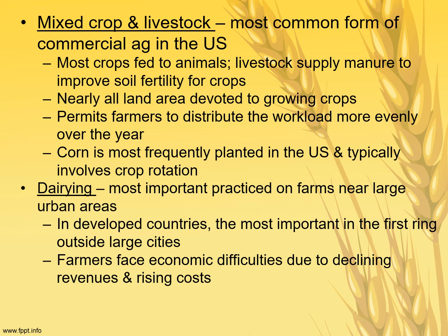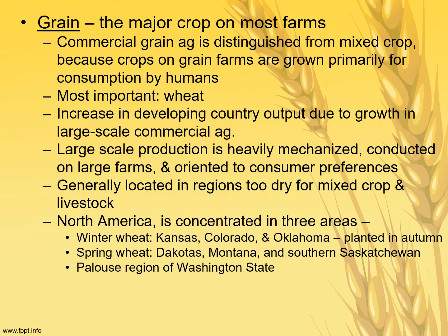Dairying is the most important practice on farms near large urban areas in developed countries — it represents the first ring outside large cities, as we'll discuss in the Von Thünen model. Farmers face economic difficulties in dairying due to declining revenues and rising costs. Grain farming is commercial agriculture distinguished from mixed crop and livestock because crops are grown primarily for human consumption. The most important grain is wheat. Large-scale production is heavily mechanized on extremely large farms. Wheat requires less water than corn — corn is mainly grown in the Midwest, while wheat is mainly grown in the Great Plains.